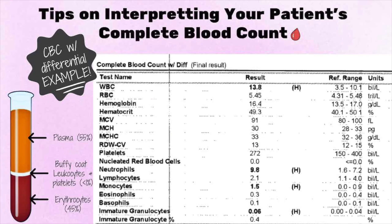Let's talk about white blood cells, or leukocytes. These are very important in fighting infections. A normal white blood cell count is generally between 4,000 to 11,000. An elevated white blood cell count is also referred to as leukocytosis. White blood cells also have very important individual components — the different types of white blood cells — which are the neutrophils, lymphocytes, monocytes, eosinophils, and basophils.